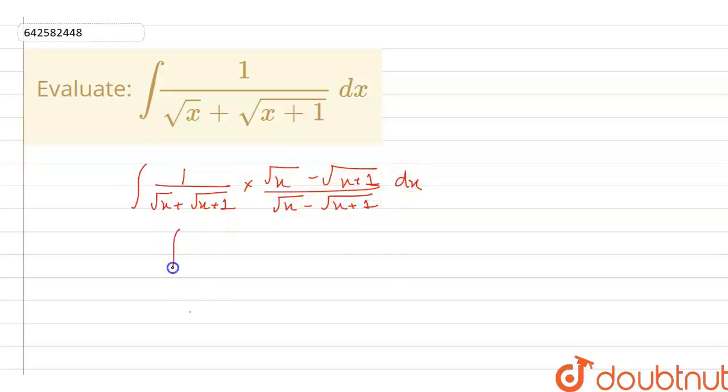So we have rationalized it, so we have under root x minus under root x plus 1 and this becomes under root x whole square minus under root x plus 1 square dx.